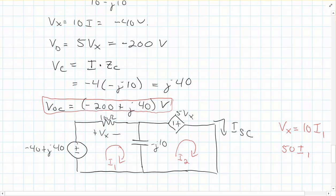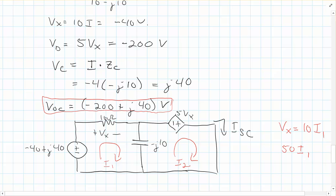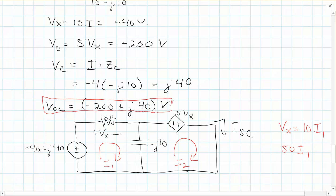So now what do we need to do here? The next thing is we need to find the short circuit current. So we redraw the circuit, making sure to keep all your polarities labeled, and then we short the terminals. We're looking for this I short circuit. I'm going to draw a couple loops I1 and I2. I need to figure out what this voltage is in terms of I1 and I2. We have plus minus Vx, Vx is equal to 10 times I1. And then this voltage here would be 5 times Vx, which would get me 50 I1. So I'll even write it in the diagram — this is equal to 50 I1.